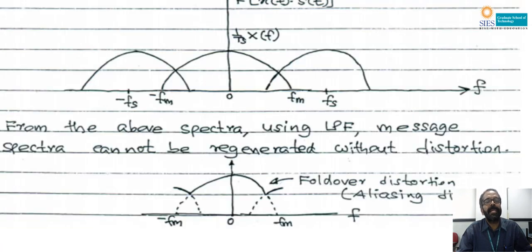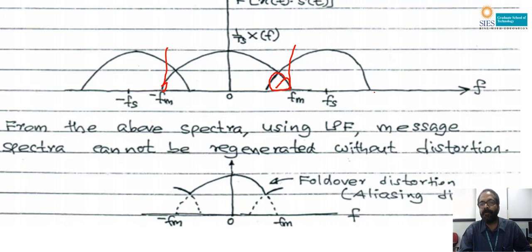Case 3: fs less than twice fm. When fs < 2fm, this is known as undersampling. Due to fs being less than twice fm, there is an overlap between X(f) and X(f − fs). You can clearly see that overlap — X(f) and X(f − fs) are overlapping. Due to this overlap, there is a distortion between spectrum X(f) and the shifted signal X(f − fs). If it is passing through an LPF with cutoff frequency fm, the output from −fm to +fm contains parts of X(f − fs) and X(+fs) overlapping with X(f), causing distortion at the output. This distortion is known as fold-over distortion or aliasing distortion.